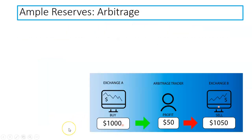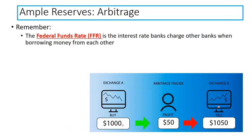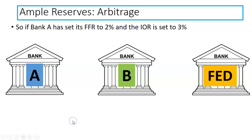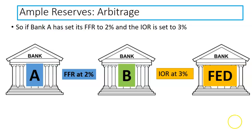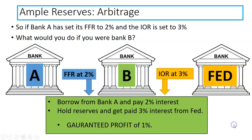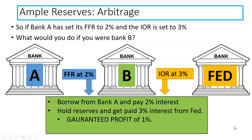What role does arbitrage play in our ample reserve system? We have to remember two things. One: the federal funds rate — the interest rate banks charge other banks when borrowing money from each other. Two: the interest on reserves — the interest rate banks can earn by holding onto reserves. Here's the scenario: say we have Bank A, Bank B, and the Federal Reserve. If Bank A sets its federal funds rate to 2% and the Fed sets their interest on reserves to 3%, what would Bank B do? Bank B would borrow money from Bank A and pay back 2%, then hold reserves and get paid 3% from the Fed — therefore Bank B is guaranteed a profit of 1% without using any of their own money.